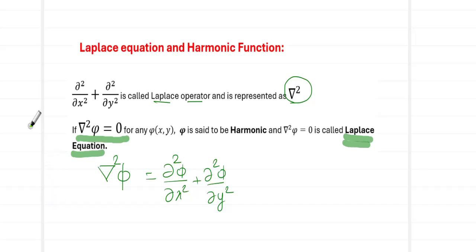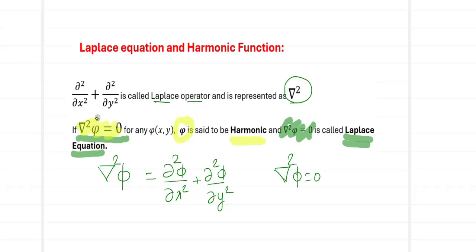A Laplace equation is one given by ∇²φ = 0. The function φ which satisfies the Laplace equation is called a harmonic function. The operator is called a Laplacian operator. When you input a function φ and compute it, you call it the Laplacian value. If it equals zero, that is the Laplace equation, and a function satisfying it is called a harmonic function.